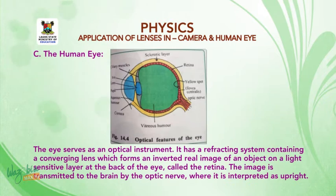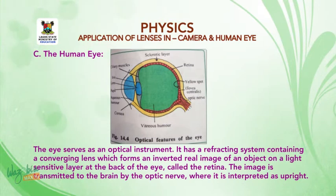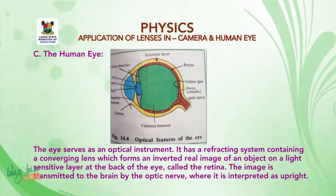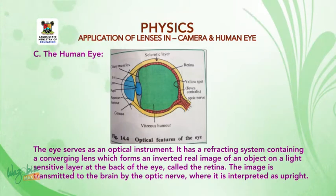Now, the human eye. The eye serves as an optical instrument. It has a refracting system containing a converging lens which forms an inverted real image of an object on a light-sensitive layer at the back of the eye called the retina. The image is transmitted to the brain by the optic nerve where it is interpreted as upright.